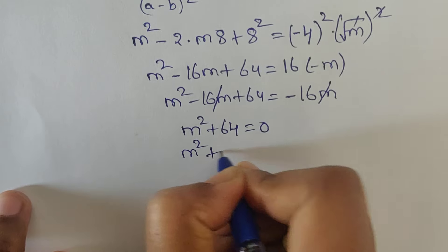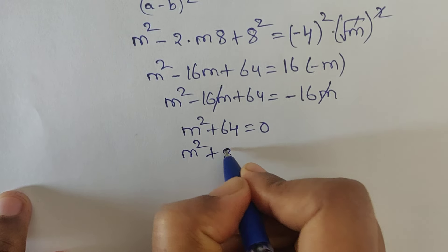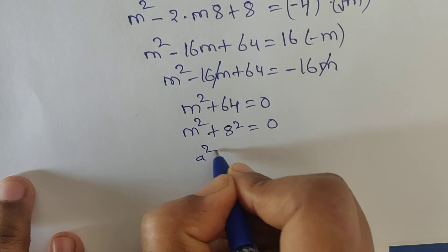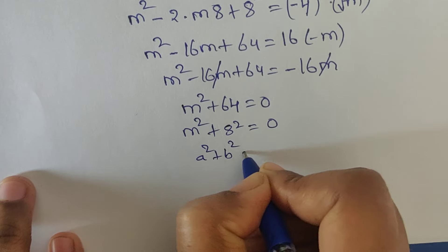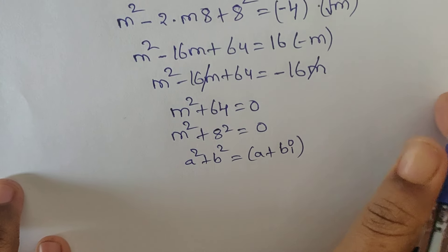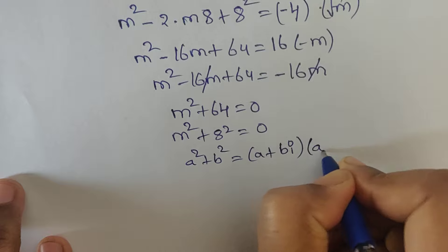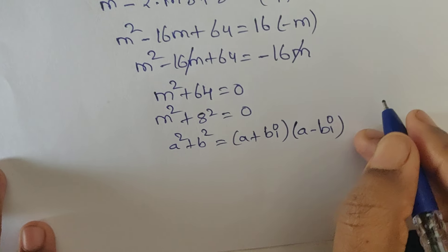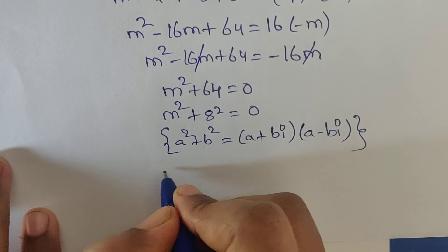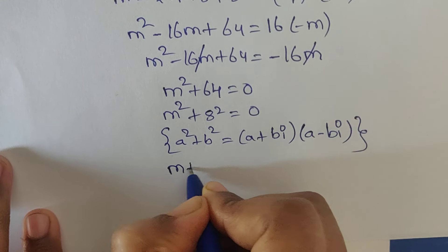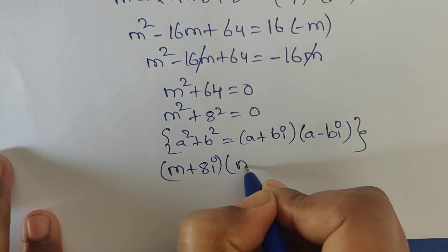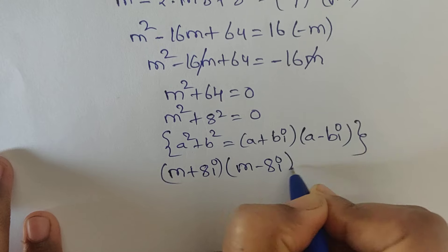So m squared plus 64 can be written as m squared plus 8 squared. This is in the form of a squared plus b squared, and we know the formula: a squared plus b squared equals (a plus bi)(a minus bi). Using this formula, we can write (m plus 8i)(m minus 8i) equal to 0.